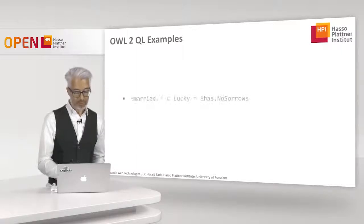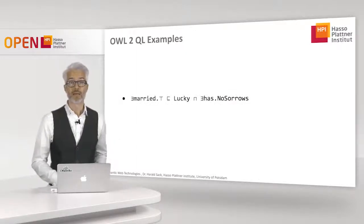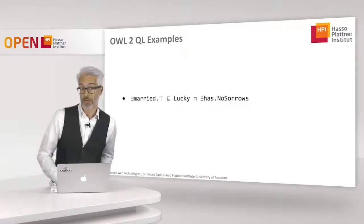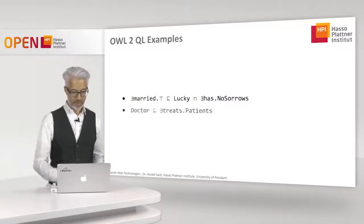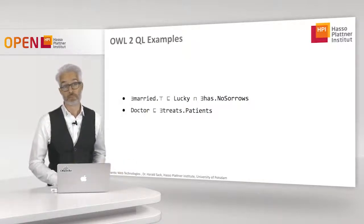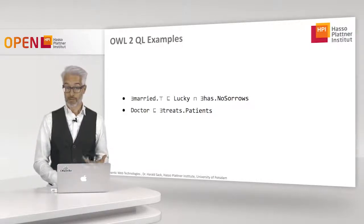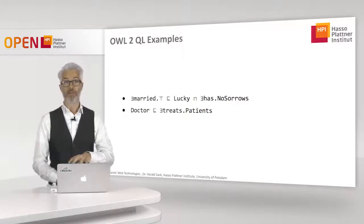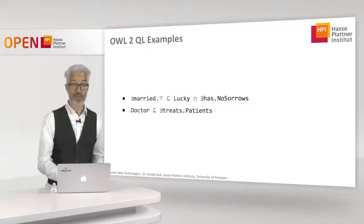Examples in OWL 2 QL: one who is married is lucky and has no sorrows; a doctor is somebody who treats patients. These examples show that the language is sufficiently expressive to define many interesting classes and relations.